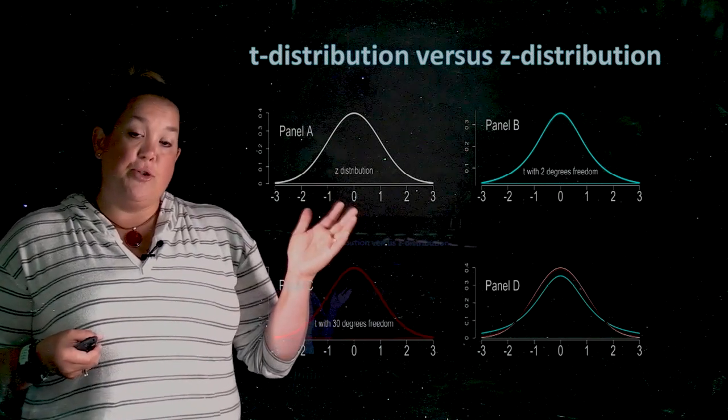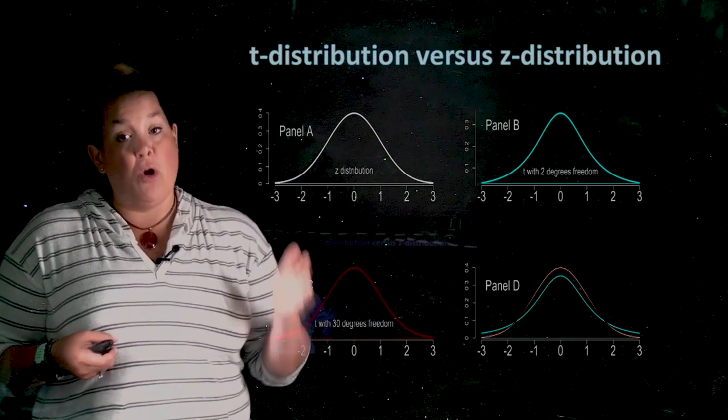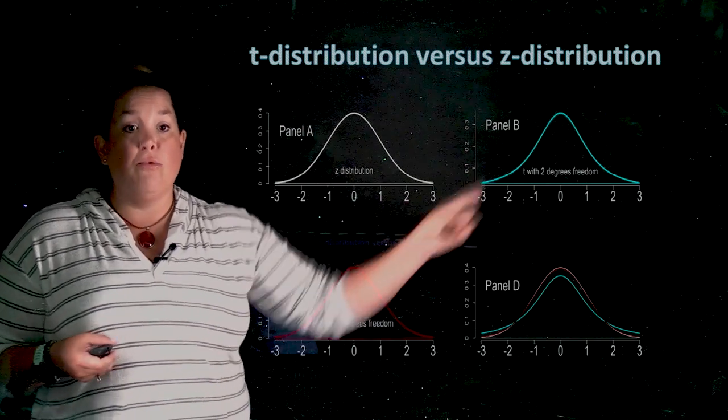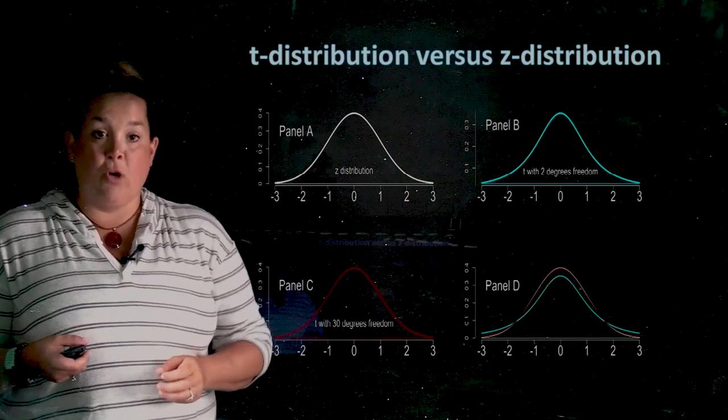The z-distribution, there's only one, and there's an infinite number of t-distributions, all of which depend on this measurement called degrees of freedom.